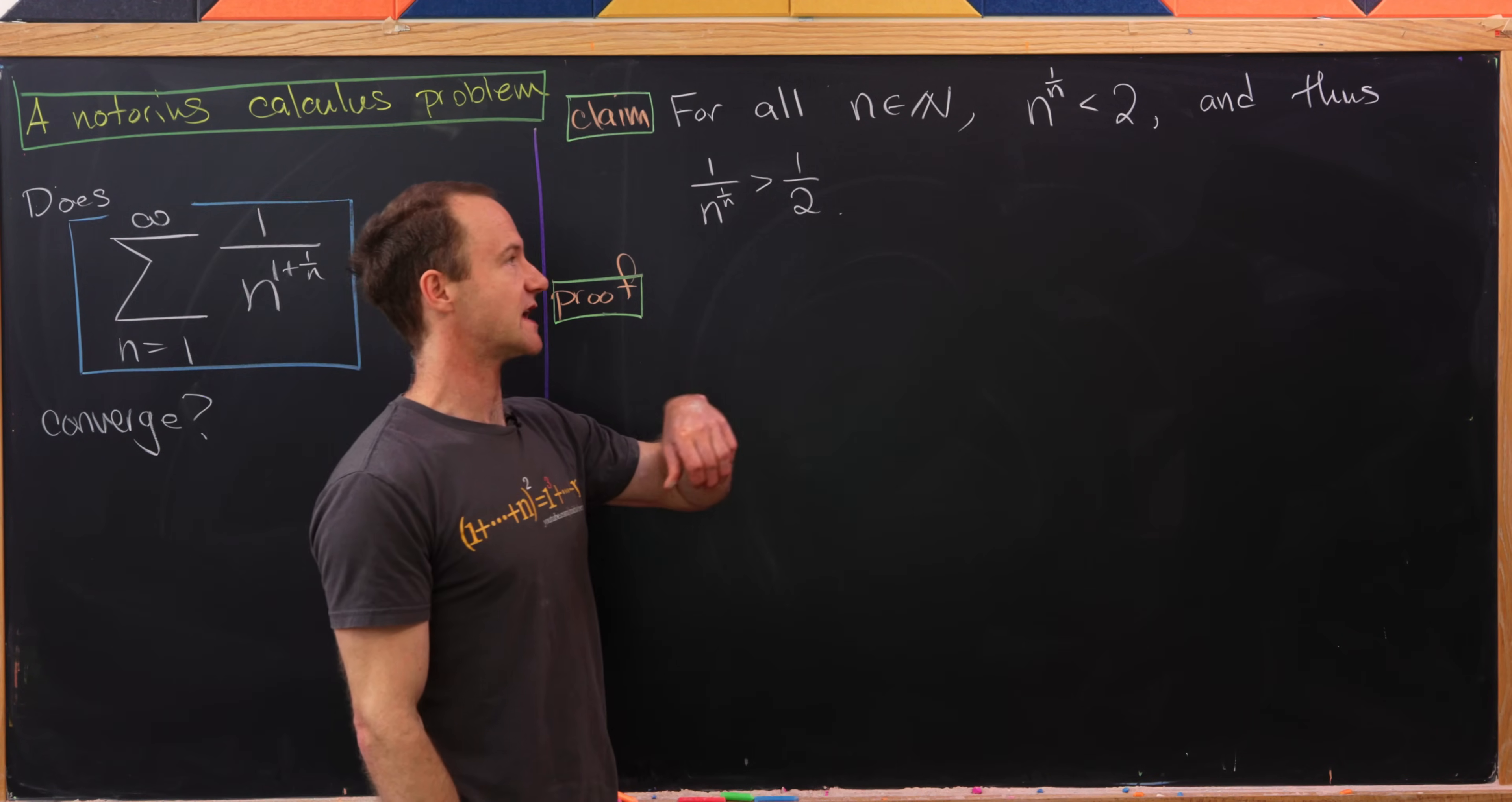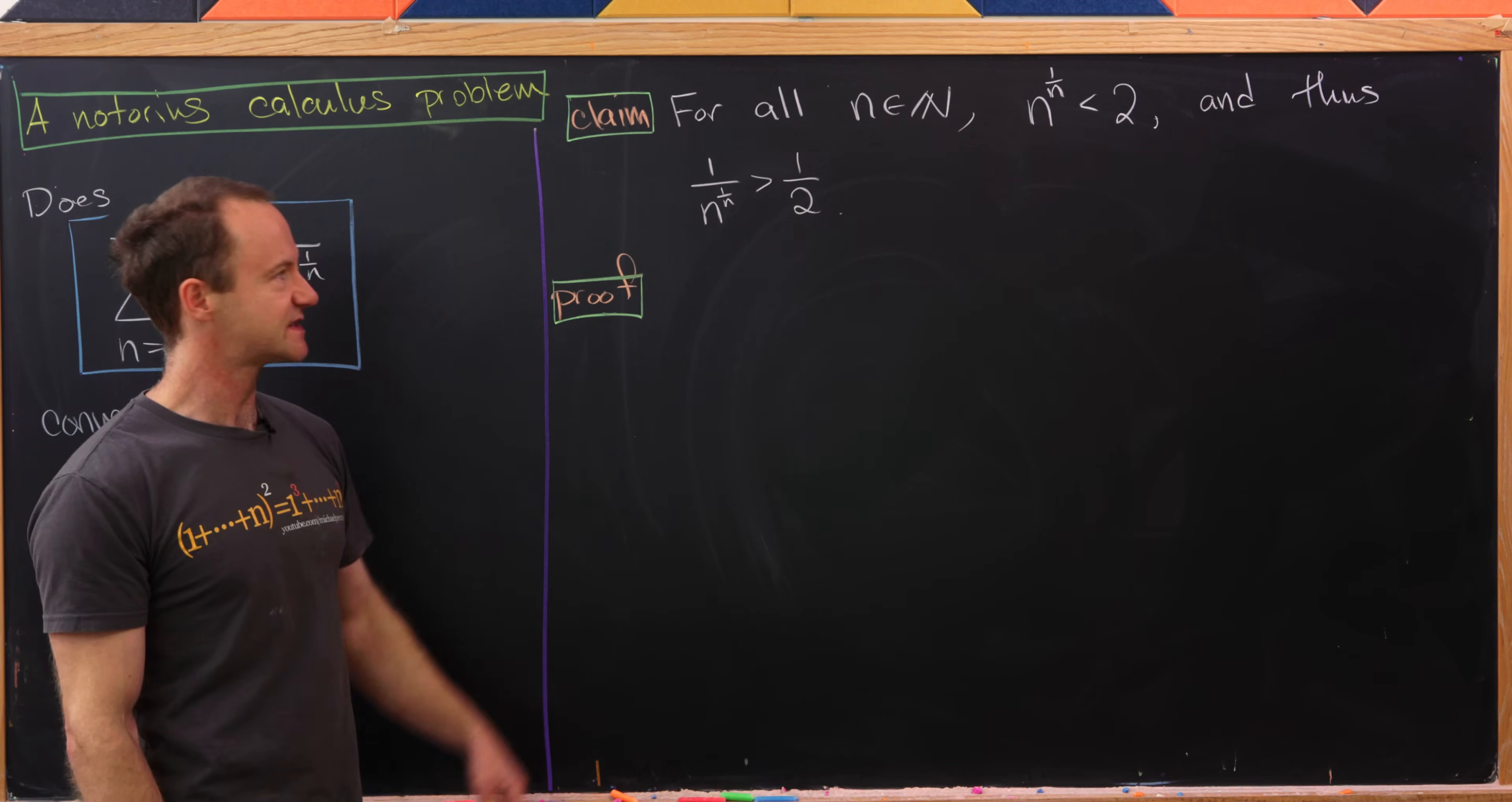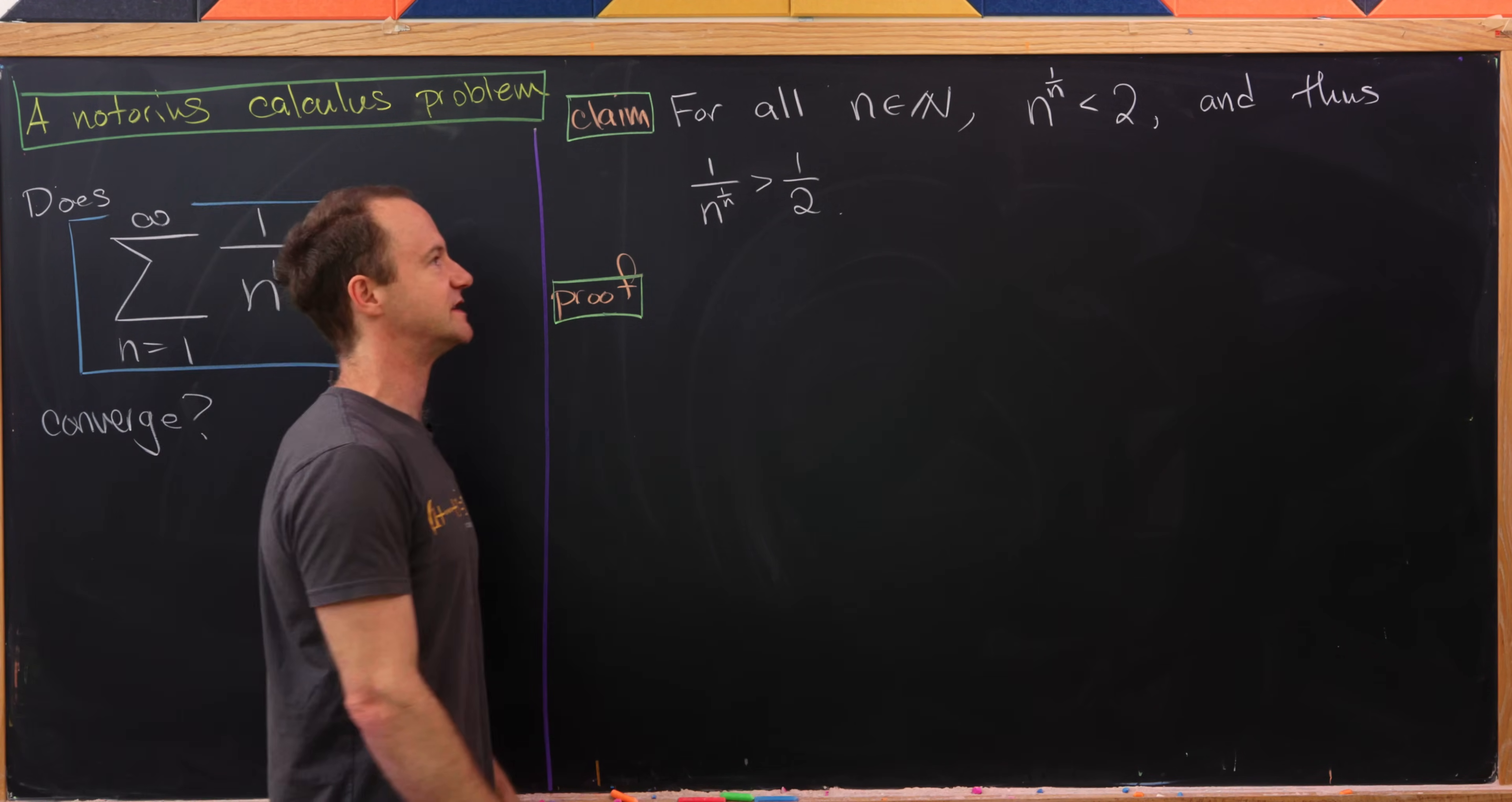For all natural numbers n, n^(1/n) is always less than 2. And thus if we take the reciprocal, we have 1/n^(1/n) is always bigger than 1/2. So how might we do this?